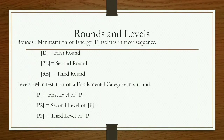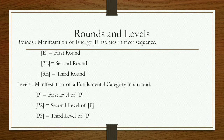Now, what is level? Level means the manifestation of a fundamental category in a round. That is, in a single round, if any kind of isolate comes more than one time, then a level will be formed. In this example, I have given the example of P — personality isolate. P comes three times in a single round. That is why I have written: for the first P, just P; for the second time, P2; P2 means the second level of personality isolate; P3 means the third level of personality isolate.